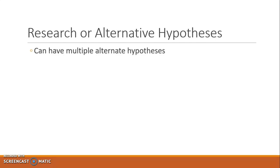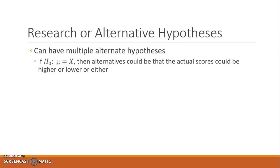Now it is possible to have multiple alternate hypotheses, and in fact it's very common. A lot of what we were working on earlier was that the null hypothesis is equal to something — not less than or equal, or more than equal, but equal to something. If the null hypothesis is that the population mean mu is equal to something, then the alternative could be that the mean is higher, lower, or could be either — you don't know.